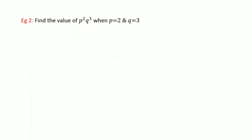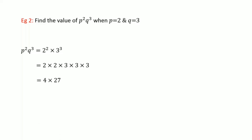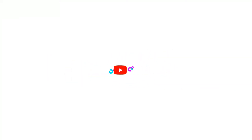Let us do one more example: find the value of p squared into q cubed when p is 2 and q is 3. Following the first method, I substitute: p squared becomes 2 squared and q to the power 3 becomes 3 to the power 3. Then I expand: 2 into 2 is 4, and 3 into 3 into 3 is 27, so it becomes 4 into 27 and the final answer is 108. Hope I made myself clear on how to write a number in index notation with a prime number base, with algebraic bases, and how to get the answer by substituting values on unknown terms.